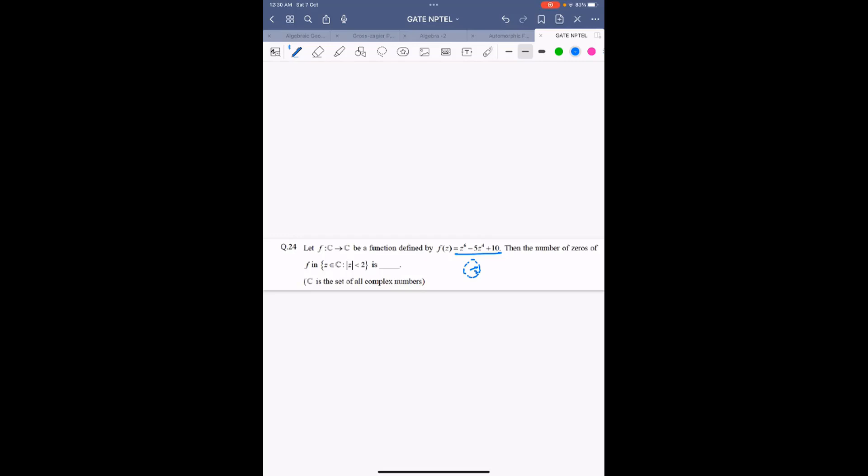So this is question number 24 from GATE 2019. The question is from complex analysis and it says that f is a function from C to C defined by this polynomial z to the power 6 minus 5z to the power 4 plus 10. Then we want to find the number of zeros of f inside the open disk of radius 2. So we recall Rouché's theorem.